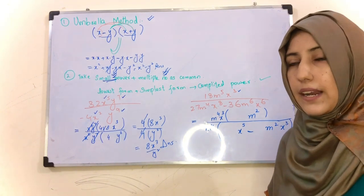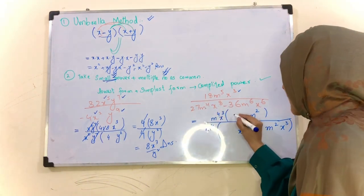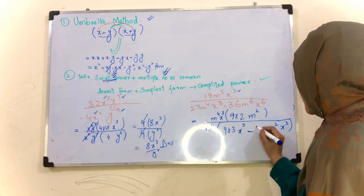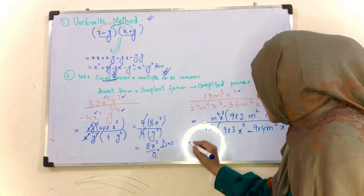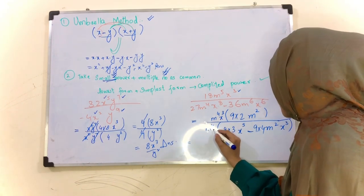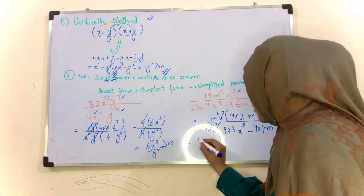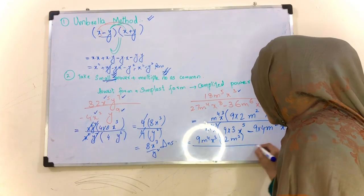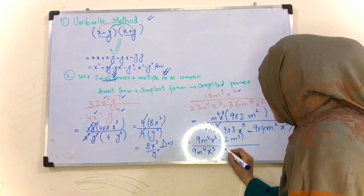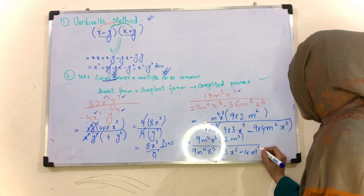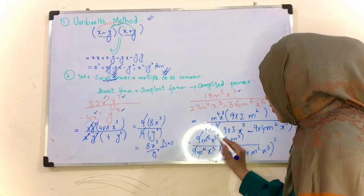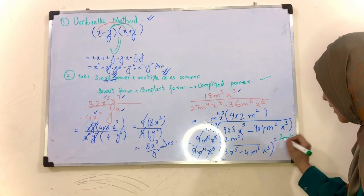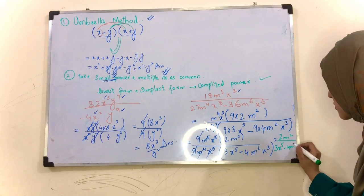Doosri taraf aate hain multiple number as common. Ab humne koi aisa number lena hai jo ke in sab ka multiple ho - to in sab ka multiple hai 9. 2s are 18, 3s are 27, 4s are 36. Ab next step mein 9 ko bhi hum common lenge - hamare paas m4x³, 2m² aayega. Yahan se bhi 9 common le lenge: 3x5 minus 4m²x³. Yeh 9 cancel ho jaega, 4 cancel ho jaega, 3 cancel ho jaega. Hamare paas answer mein rah jaega: 2m² · 3x5 minus 4m²x³.